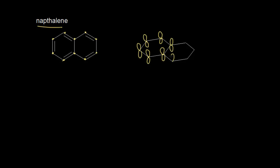These p orbitals are right next to each other, which means they can overlap. If you think about the criteria for a compound to be aromatic, this would meet that first criteria because you can see that you have overlap of these p orbitals. And in this case, we have delocalization of electrons across two rings. When we think about the second criteria, which was Huckel's rule in terms of the number of pi electrons our compound has, let's go ahead and analyze naphthalene, even though technically we can't use Huckel's rule.